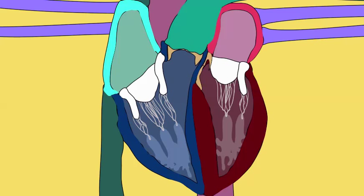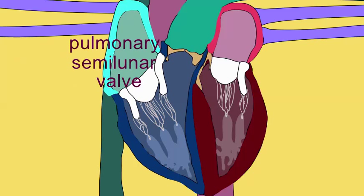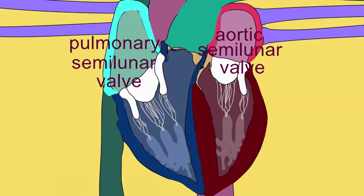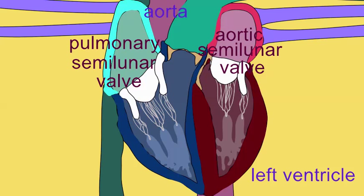The two semilunar valves separate a ventricle from the vessel which proceeds from them. And so the pulmonary semilunar valve separates the right ventricle from the pulmonary trunk, while the aortic semilunar valve separates the left ventricle from the aorta. These semilunar valves can be recognized because they possess a vessel above them, not an atrium, and they lack the chordae tendineae which are observed in the AV valves.